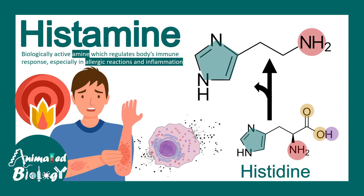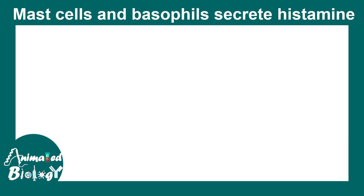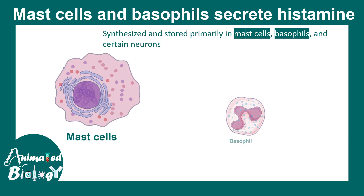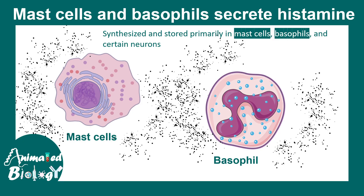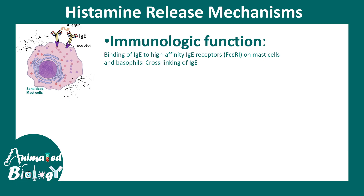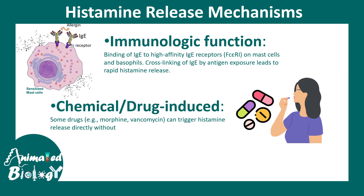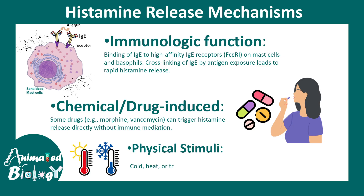In this video we'll talk about histamine and histamine antagonists. Histamine is a biologically active amine secreted by mast cells and basophils, which modulate allergic responses and inflammation in the body. Mast cells have specific receptors known as Fc1 receptors that bind to cross-linked IgE and antigen, causing the mast cell to degranulate and release histamine. Some medications like morphine and vancomycin can also trigger histamine secretion without immune mediation.